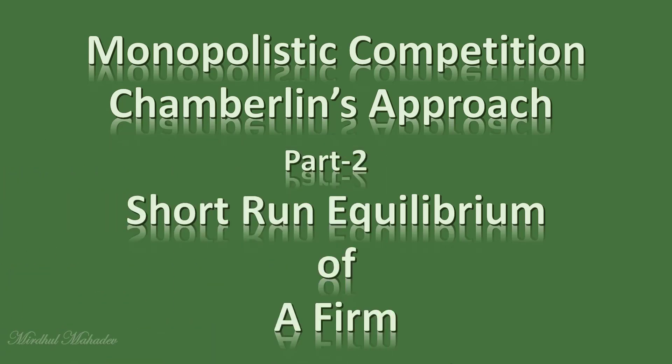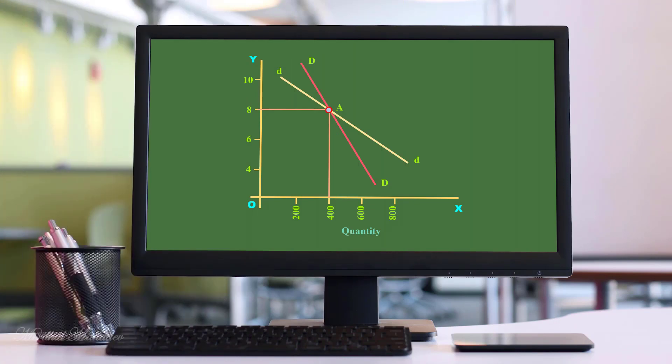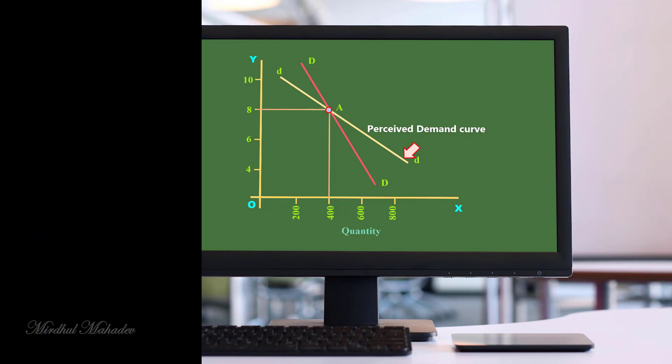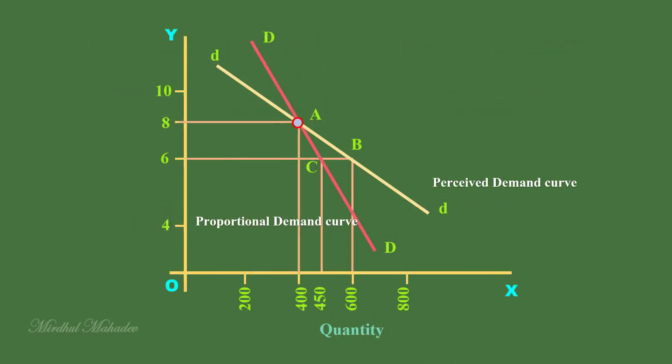Ok, we shall start our discussion from where we stopped in Part 1. Can a firm operate along the perceived demand curve as it wishes? Why does Chamberlain use proportional demand curve and perceived demand curve in his analysis? Yes,